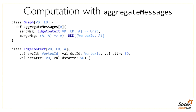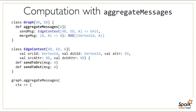The edge context looks like a triplet but also has methods you can call imperatively to send messages in both directions. Here's what it looks like to use that to find the degree of each vertex in a graph—the simplest thing you can do with this. The degree is the total number of edges going in or out of each vertex. For each edge, we send a 1 in both directions to both the source and destination, then add up the ones that each vertex receives, and that gives us the degree.